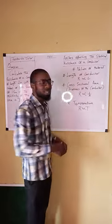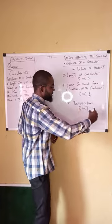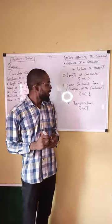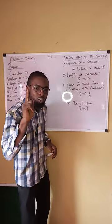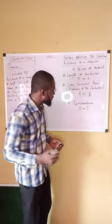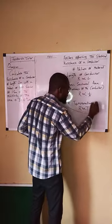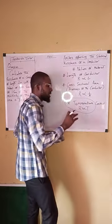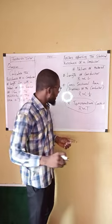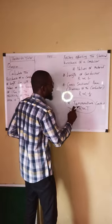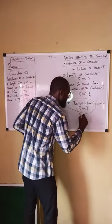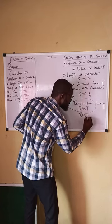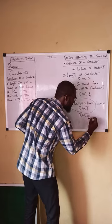Now that we have all this in place, please take a note of all these things — very important. But to satisfy Ohm's law, temperature must be kept constant. And if the temperature is kept constant, the resistance will be directly proportional to length and also inversely proportional to the area.